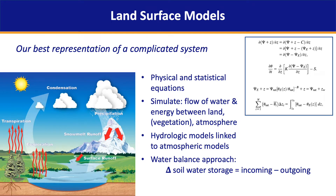As part of these land surface models there tend to be two components: the hydrological model, which would be linked to atmospheric models to get that full circle of water movement. The water balance approach is what's focused on here. We are looking at the change in soil water storage that's a result of incoming fluxes such as precipitation, minus outgoing fluxes like evaporation, transpiration, movement to groundwater, etc.